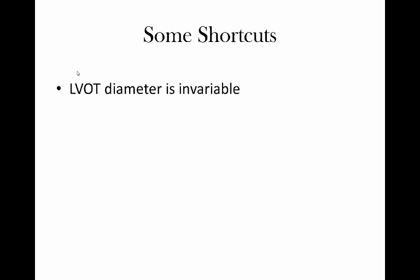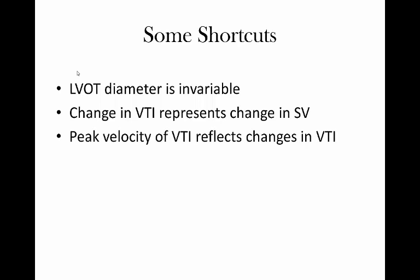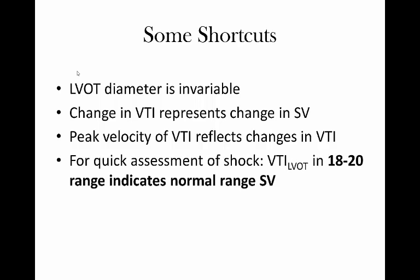Lastly, some shortcuts I tend to use regarding cardiac output determination. The LVOT diameter is invariable, so once you've determined it in a patient, if you want to do serial measurements, you don't generally have to go back and measure again. Changes in VTI will therefore represent changes in stroke volume. For serial pre- and post-intervention measurements, just go back to the apical 5-chamber and do the VTI. Similarly, tracing the entire VTI is not necessary — you can just use the peak velocity to gauge whether you've had a change. And if you're really in a hurry, use the normal VTI range of 18 to 20 centimeters, which with a typical LVOT size corresponds to a normal stroke volume. Rapidly, if you grab the VTI and it falls into the 10 to 14 range, you know you're dealing with an impaired stroke volume.